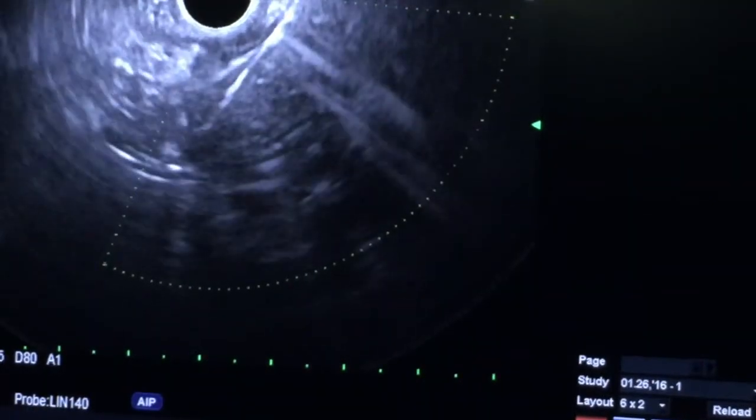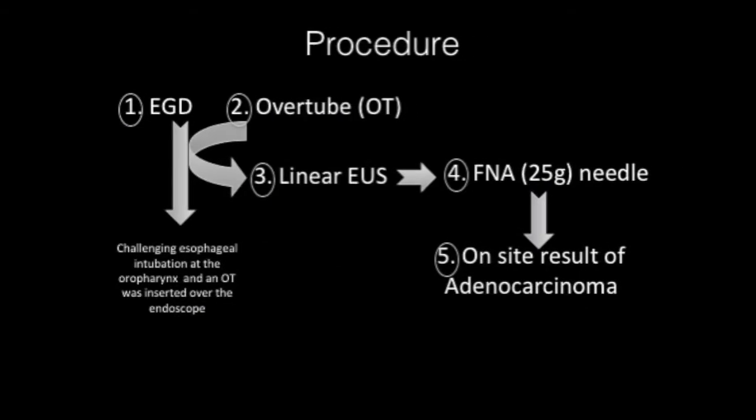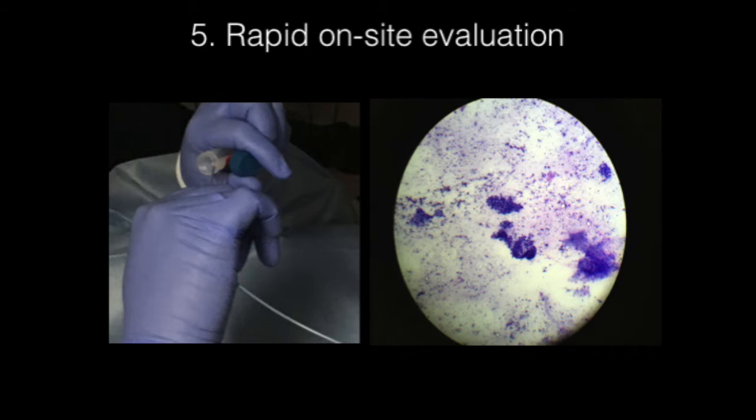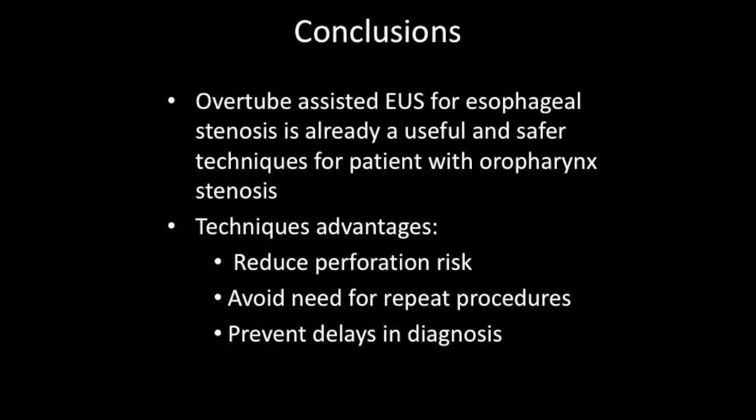Three passes of FNA with a 25 G needle were performed under echoendoscope guidance without immediate adverse events. A total of 14 slides for immediate examination were obtained. All cytopathology samples were studied in situ, and the first pass was positive for adenocarcinoma, with additional samples reserved for cell block analysis.